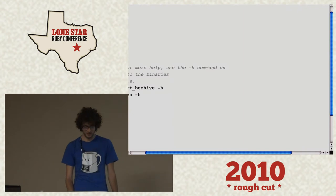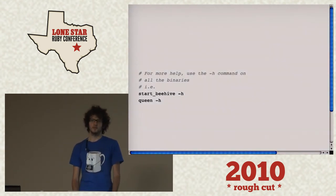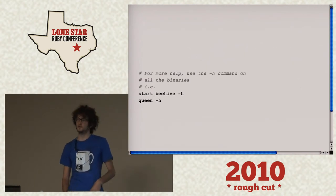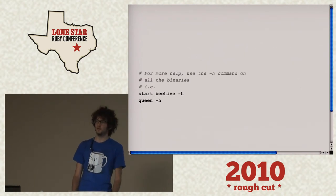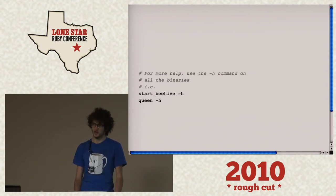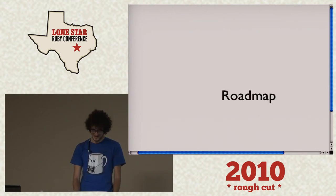If you need more help, there are bins in Beehive that will help — there's actually six or seven of them. The two that will never go away are start-beehive and queen — queen is the queen bee of the Beehive.